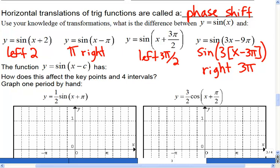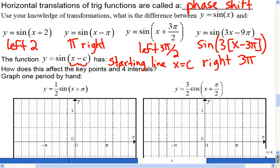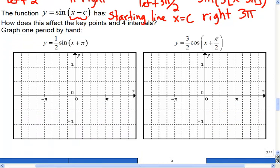So if we wanted to talk in general about this graph, where we move it, we have a phase shift. What I'm going to call this phase shift is the starting line. You'll see it makes sense when we graph it. It has a starting line right at that spot. So let me show you in this first example here why it makes sense to call it the starting line.